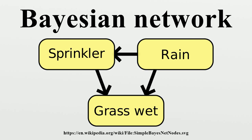Structural learning: in the simplest case, a Bayesian network is specified by an expert and is then used to perform inference. In other applications the task of defining the network is too complex for humans. In this case the network structure and the parameters of the local distributions must be learned from data. Automatically learning the graph structure of a Bayesian network is a challenge pursued within machine learning. The basic idea goes back to a recovery algorithm developed by Rebain and Pearl and rests on the distinction between the three possible types of adjacent triplets allowed in a directed acyclic graph.